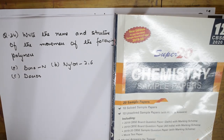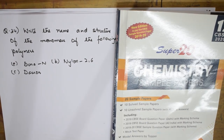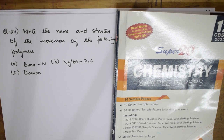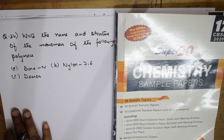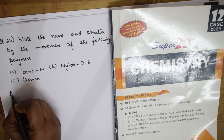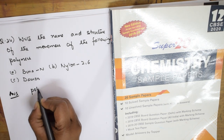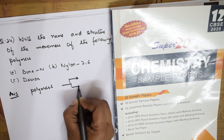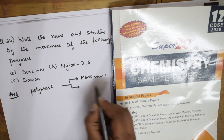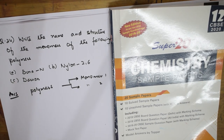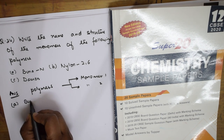Question 34 is from the polymers chapter — one of the easiest chapters in chemistry. From the polymer chapter, a compulsory question will ask you to write the monomers from a given polymer. For Buna-N, you need to know its structure. Buna-N is 1,3-butadiene with an acrylonitrile (CN) group.